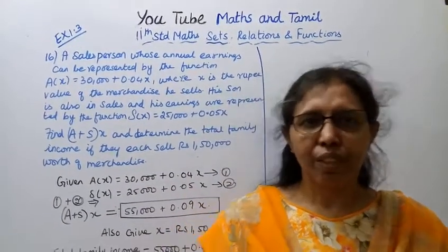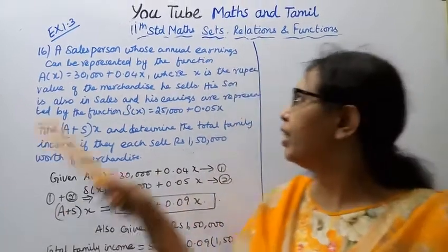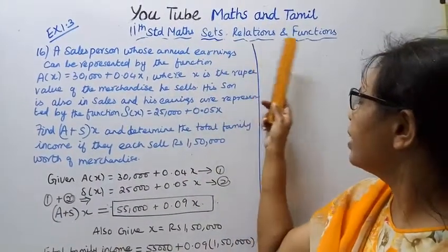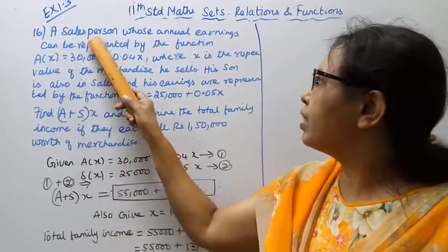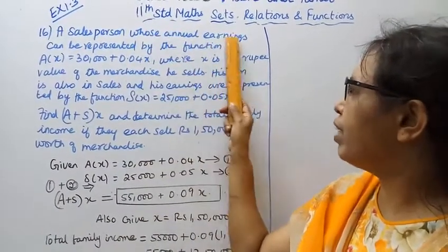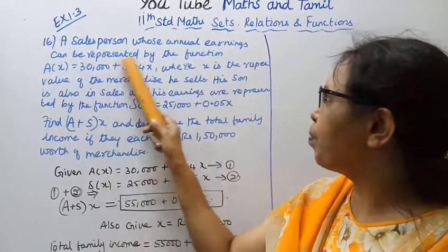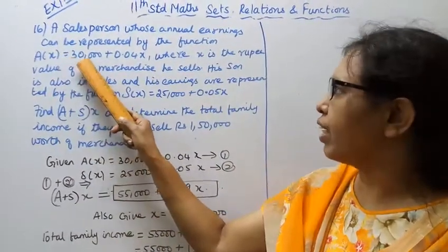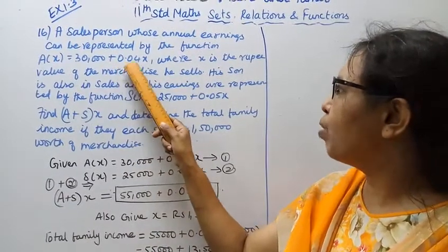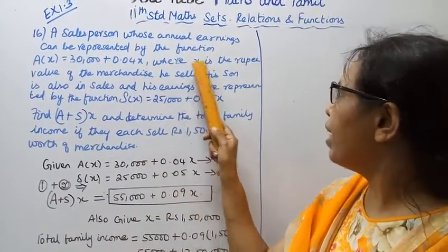Hello students, welcome to Maths and Tamil channel. 11th standard Maths, Relations and Functions, Exercise 1.3, problem 16. A salesperson whose annual earnings can be represented by the function A(x) = 30,000 + 0.04x, where x